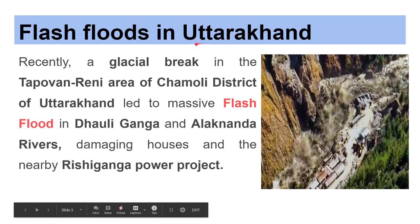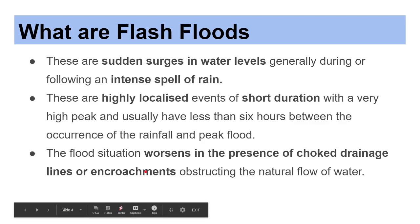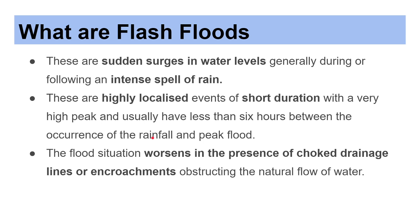The first topic of our discussion is flash floods in Uttarakhand. Recently there was a glacial break in the Tapovan Raini area of Chamoli district in Uttarakhand, which led to massive flash floods in the Dhauli Ganga and Alaknanda rivers, damaging houses and the nearby Rishi Ganga Power Project.